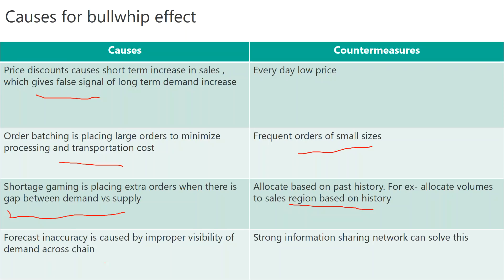In summary, the bullwhip effect is demand distortion, and it mostly happens due to incorrect or insufficient demand sharing. All these problems can be solved by making the supply chain more transparent. We need to invest in technology so that supply chain partners can see data on time, check their order status, and monitor consumption on a real-time basis — this can hugely increase the efficiency of the supply chain.